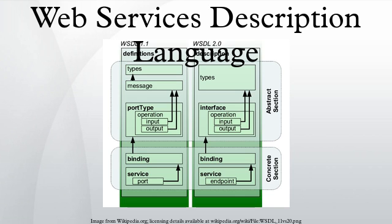WSDL 1.2 was renamed to WSDL 2.0 because it has substantial differences from WSDL 1.1. The changes include: added further semantics to the description language, removed message constructs, operator overloading not supported, port types renamed to interfaces, and ports renamed to endpoints.